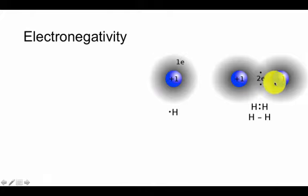Hydrogen atoms are exactly the same, so these two electrons spend equal amounts of time around both atoms. We can think about the amount of time the electron spends around the atom as the electron density—how dense the electron cloud is around the atom.